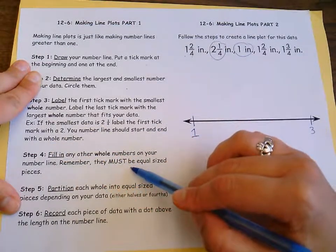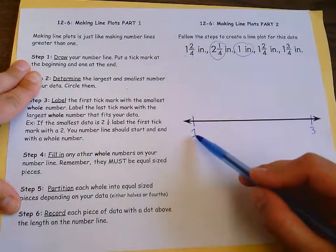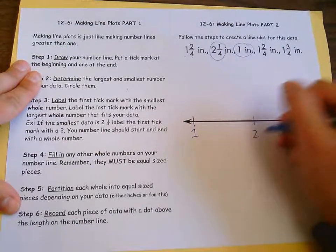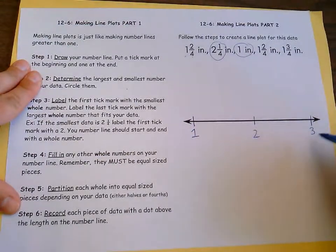Now we need to fill in any whole numbers on our number line. And remember, we must have equal size pieces. So between one and three there's only one whole number missing, and that would go right in the middle: one, two, three.